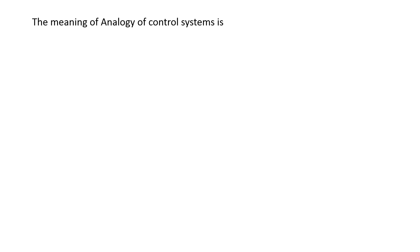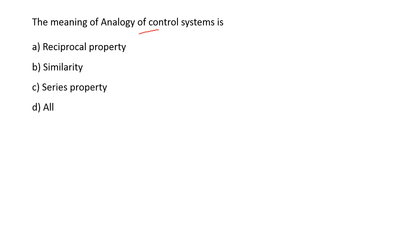Next: the meaning of analogy in control systems is — options are: reciprocal property, similarity property, series property, all of the above. The meaning of analogy in control systems is similarity — if two networks are said to be analogous, the differential equations of those two systems are similar. So option B is the right answer.